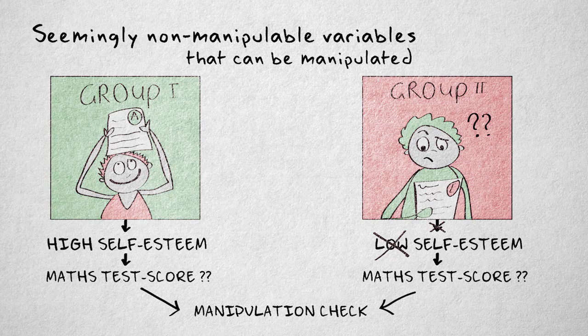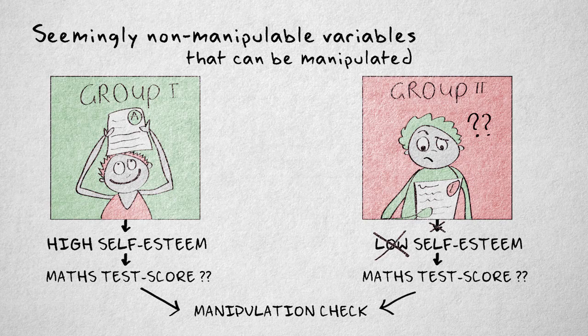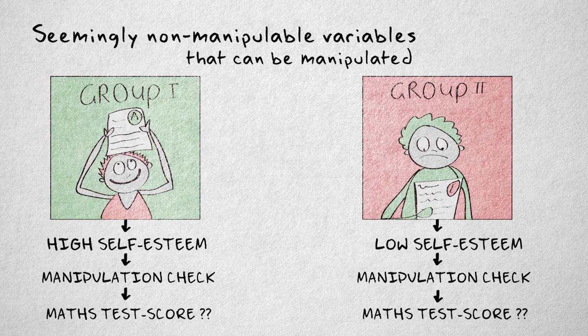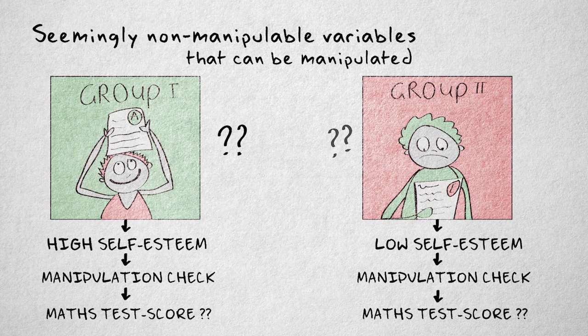It's important to perform this check, this measurement, after measuring the dependent effect variable. Otherwise, you might give away the purpose of the experiment. Asking participants about their self-esteem before the math test might lead them to question the feedback they received.